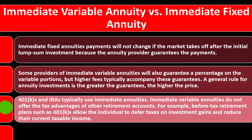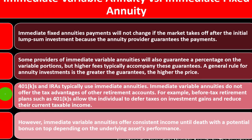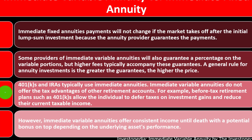401ks and IRAs typically use immediate annuities. Immediate variable annuities do not offer the same tax advantages as other retirement accounts. Before-tax retirement plans such as 401ks allow individuals to defer taxes on investment gains and reduce their current taxable income. However, immediate variable annuities offer consistent income until death, with a potential bonus on top depending on the underlying assets' performance.